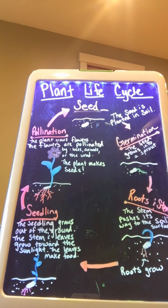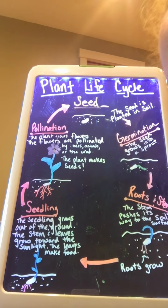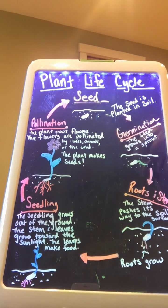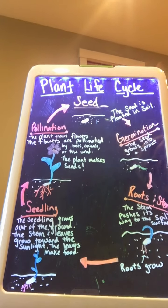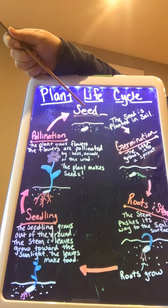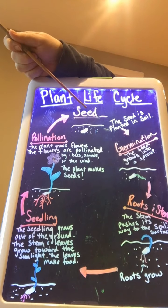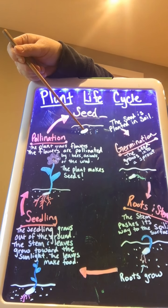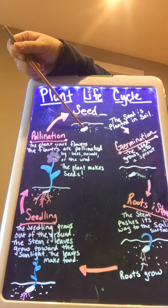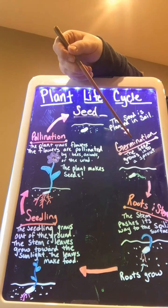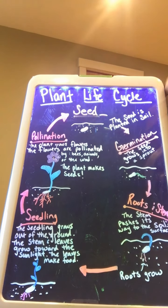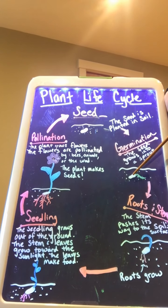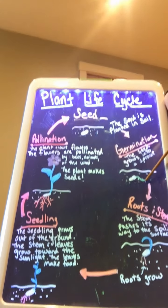Mrs. Jordan spent some time this morning making a diagram of the life cycle of a plant, which I'm going to go through really quickly with you and then show you what they look like in real life. Usually a plant starts with a seed. A seed is in the ground and once it gets water and it's nice and warm, the seed will start to germinate. Germinate means that the seed grows into a little sprout. You can see the seed here and it's growing a little sprout.